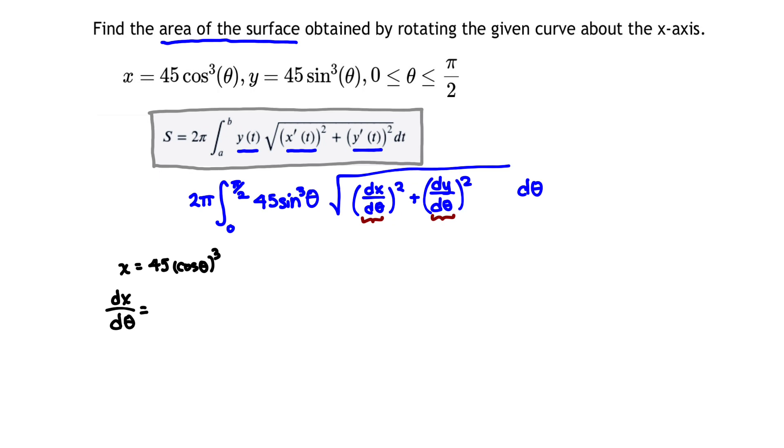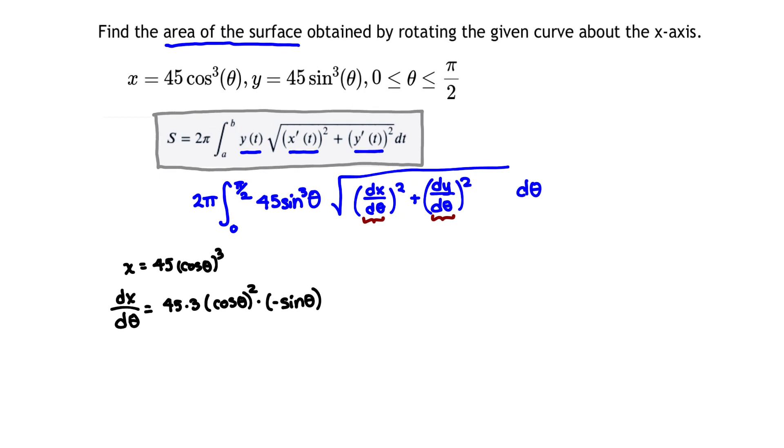Notice, the derivative of 45 cosine cubed is equivalent to using the power rule on the outside, so that's going to be 45 times 3 times cosine theta squared times the derivative of cosine theta, which is just negative sine theta.